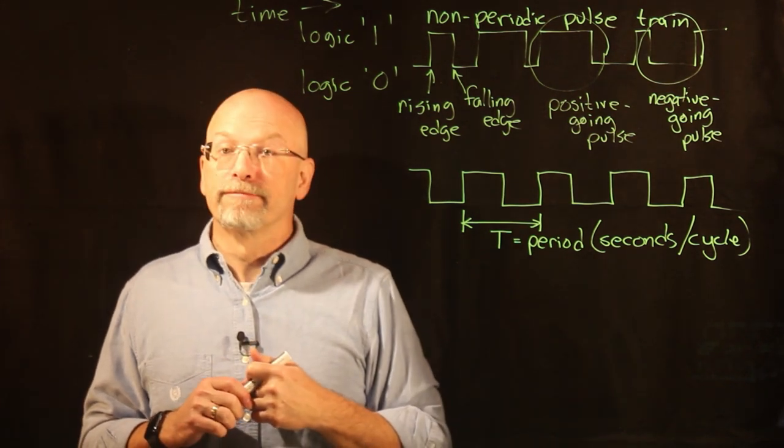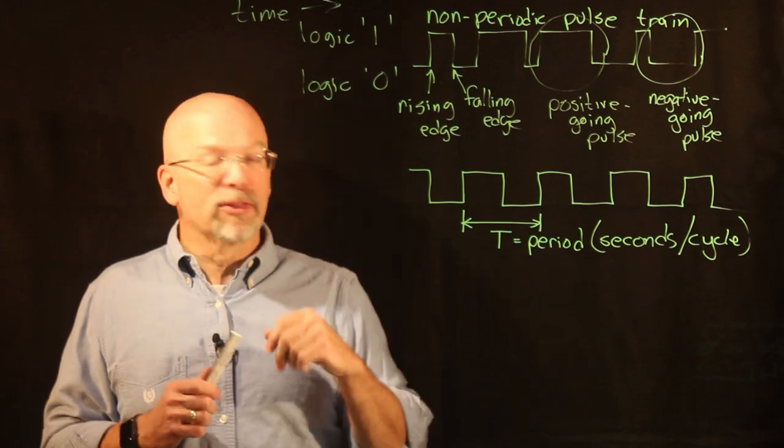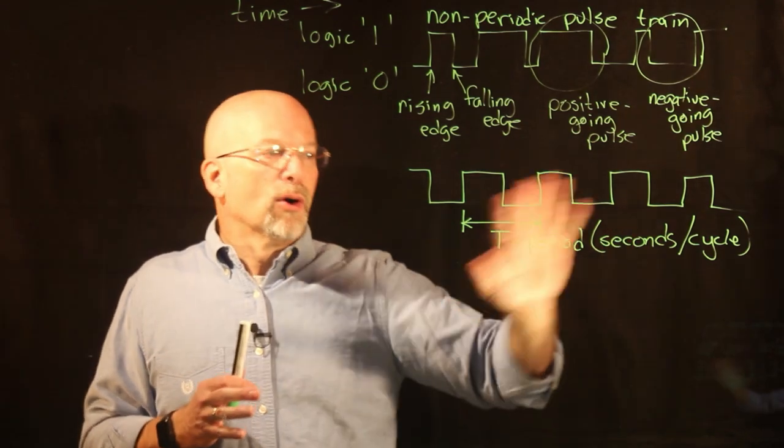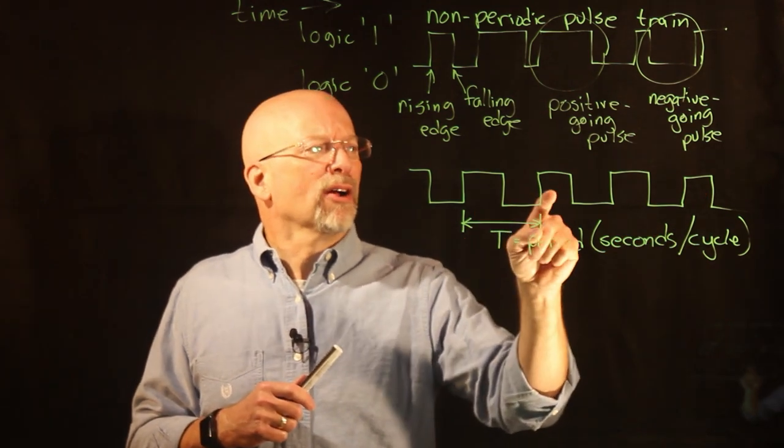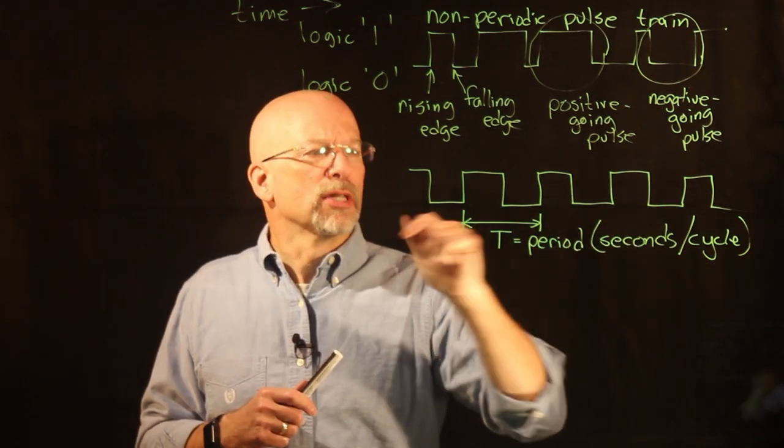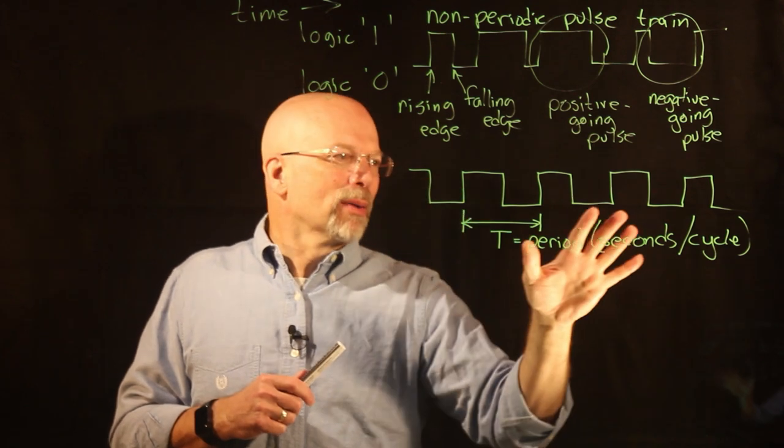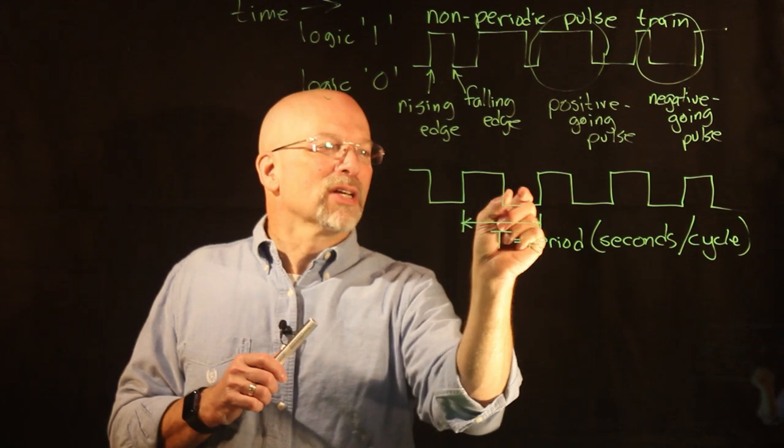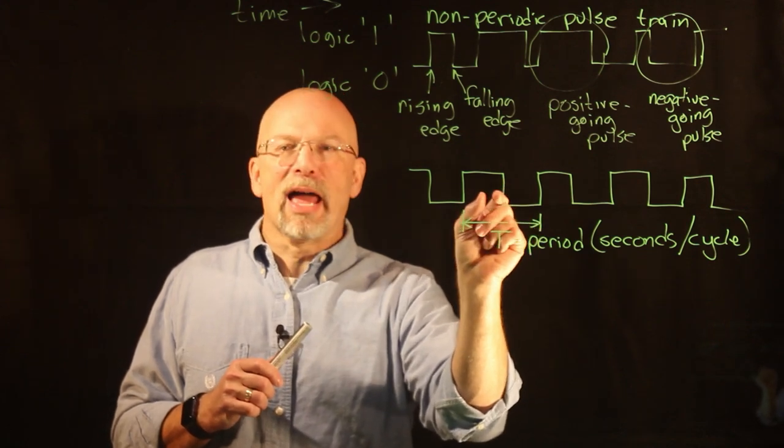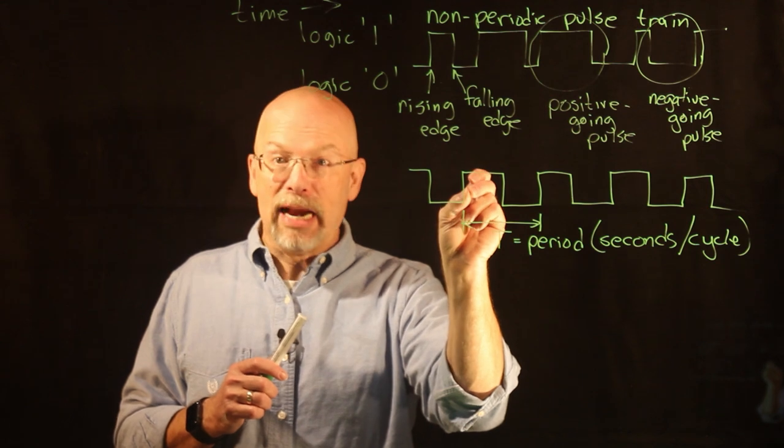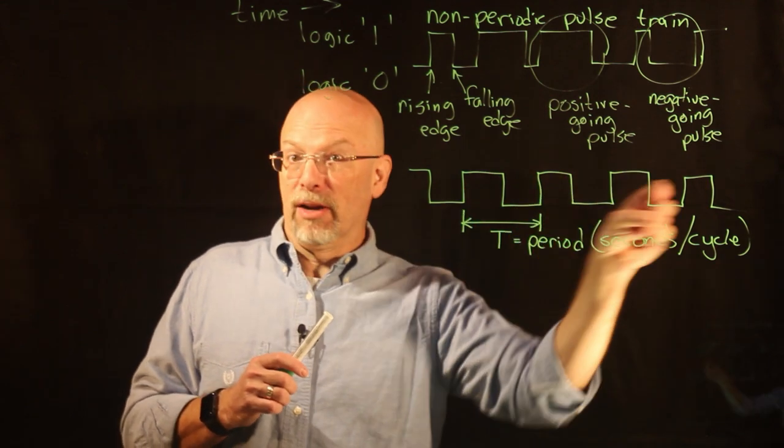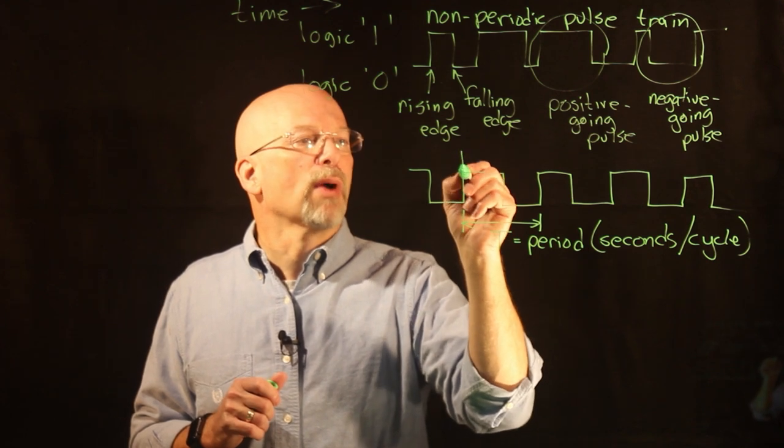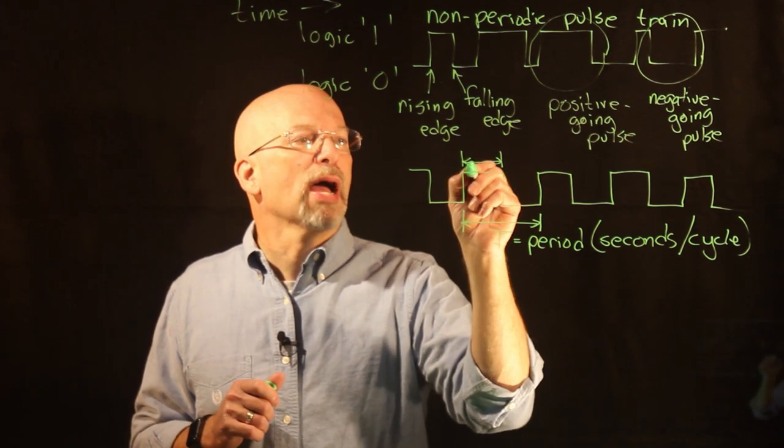The second measurement that we need in order to accurately represent this signal is—right here I've got these positive going pulses. The positive going pulses, you know, forgive my accuracy of my drawing here, in this case it looks like it takes up about half a cycle, but it's possible that these pulses could be really narrow and come at the same period.